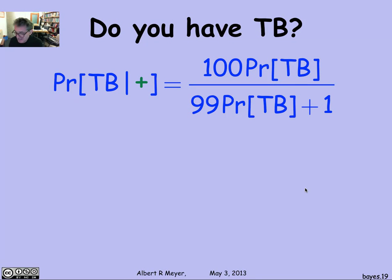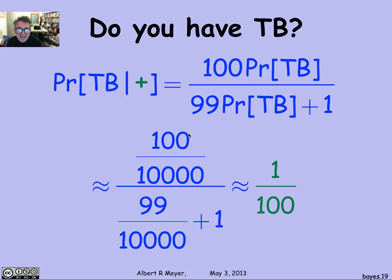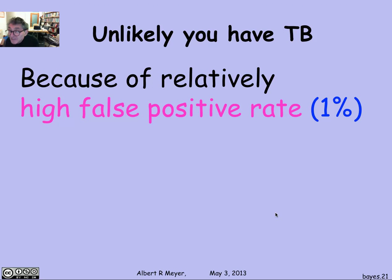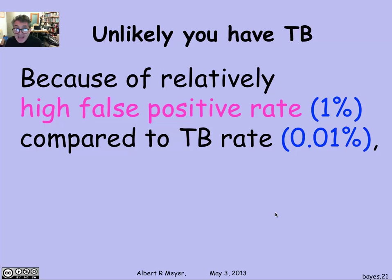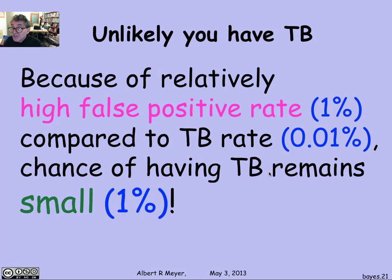Let's plug that into our formula. The probability that you have TB given the test is positive becomes 100 over 10,000, divided by 99 over 10,000 plus 1. The denominator is essentially 1 — it's 1.01 — and the numerator is 1/100. So this is basically about 1/100. In other words, it's not very likely that you have TB, because the relatively high false positive rate of 1% washed out the actual TB case rate of only 0.01%. Almost all positive reports are caused by the false positive rate, meaning when you test positive, you still only have about a 1% chance of actually having TB.